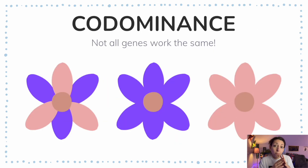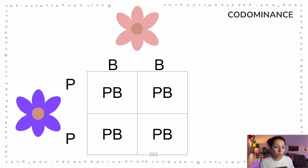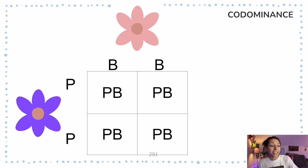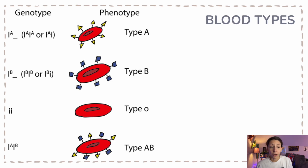Co-dominance is when we have a representation of both traits in the organism. So we're not meeting in the middle, but instead both traits show up at some level. Roan cattle are a very common example. With flowers, let's say we have purple flowers and pink flowers — instead of getting a blend, we would get some petals that are purple and some petals that are pink. In the Punnett square, we use capital letters: big P for purple, big B for pink. The heterozygous offspring carry both the purple allele and the pink allele, giving us flowers that show both traits rather than a blend. Blood types are seen as an example of co-dominance very frequently.